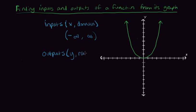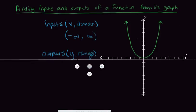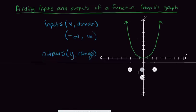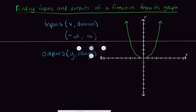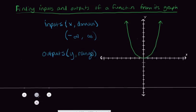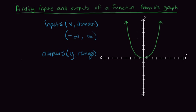For the outputs, we're looking at the y variable, or the range. To find outputs, we take a vertical scan — we move our eye vertically and ask: where do we have a graph and where don't we? Moving vertically, we have a graph up here when y is positive. We have graph values here and here, so we're good. But when we move down, there's nothing — there's no graph down here.